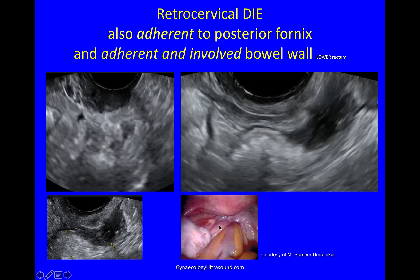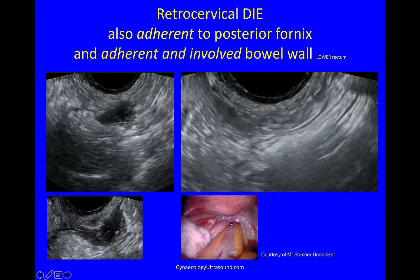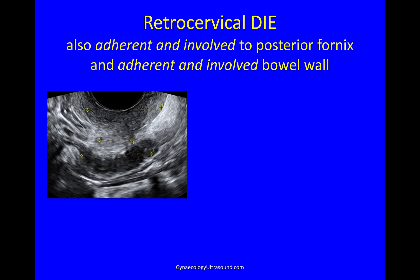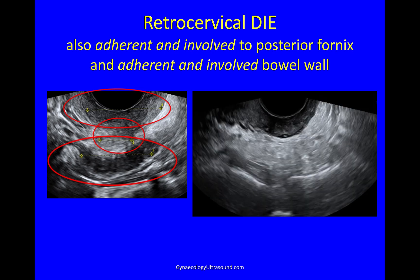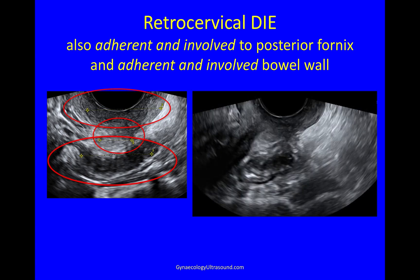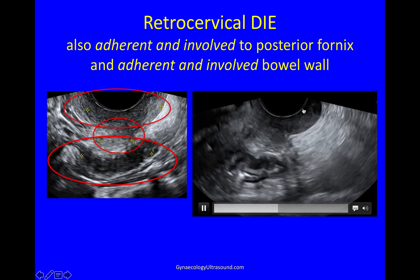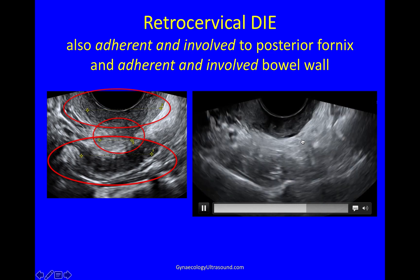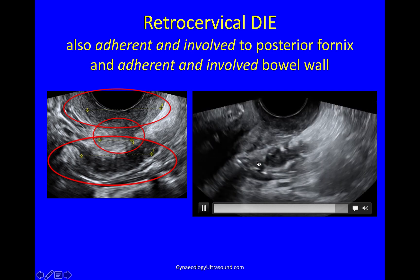At laparoscopy you can see here that there's bowel adherent to the torus. Here we can see some retrocervical DIE which is adherent to the posterior fornix but also involving it, and adherent to and involving the bowel wall too. There is the posterior fornix DIE, there is the retrocervical nodule, and here is the bowel nodule in the lower bowel, lower rectum. And this is what that looks like on ultrasound: the probe is in the posterior fornix, you can see there's a lump of DIE in the posterior fornix, you can see a nodule in the ligaments, and you can see a bowel nodule too.